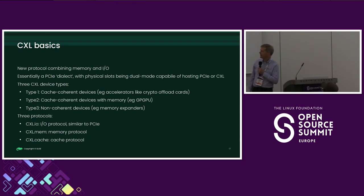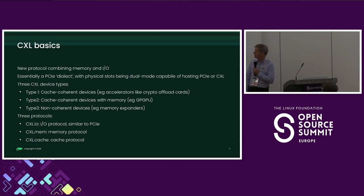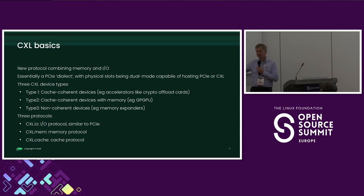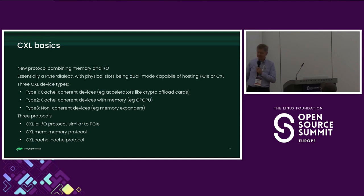They have defined three types of devices. Type 1 is cache-coherent devices — typically GPU accelerators, crypto offload stuff. Then there are cache-coherent devices with memory — GPUs and things. And then non-coherent devices, which are memory expanders. They also have different protocols: CXL.io is essentially the PCI protocol; CXL.mem is the memory protocol to talk to memory expanders; and CXL.cache is the cache protocol for type 1 and type 2 devices.